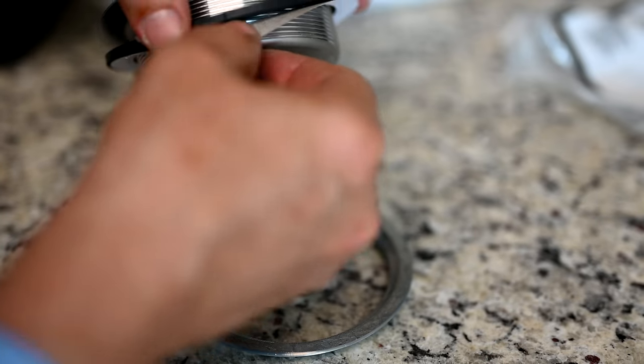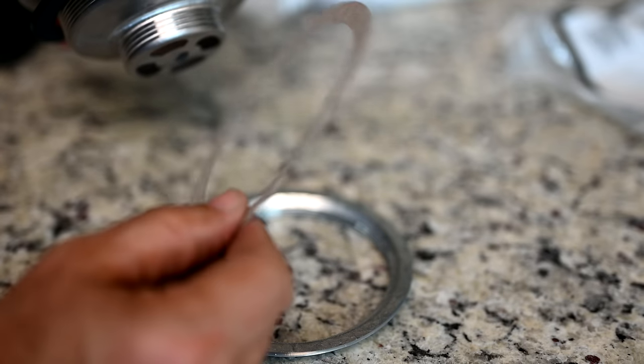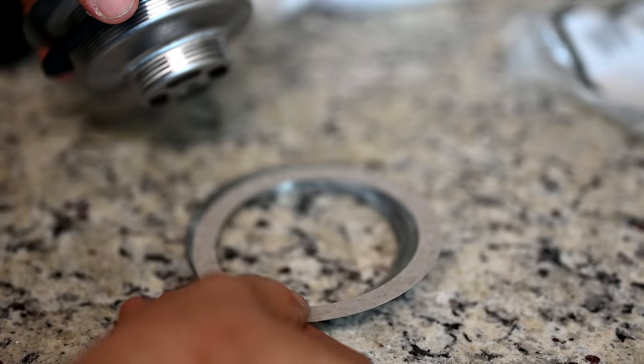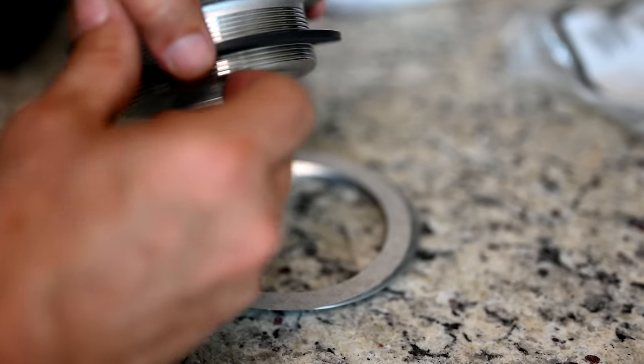Then you have this little paper washer or cardboard. Some people call it cardboard. Sometimes it's a little thicker than this. It's actually called a friction washer, and I'll show you in a second what it means when we take a look at the gasket.